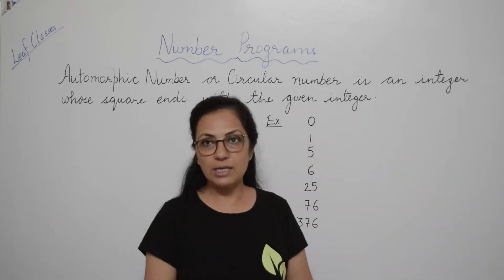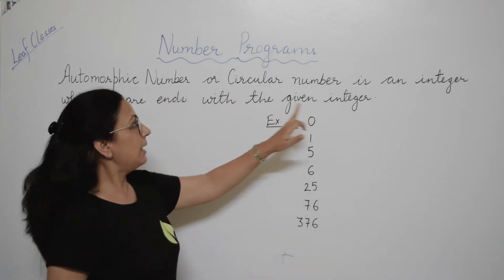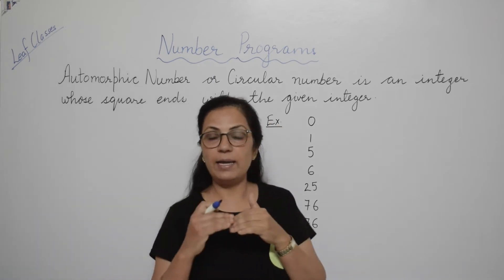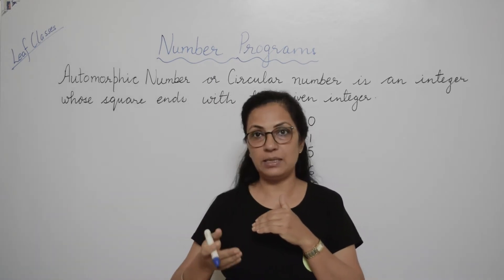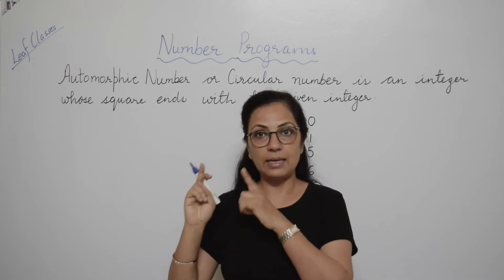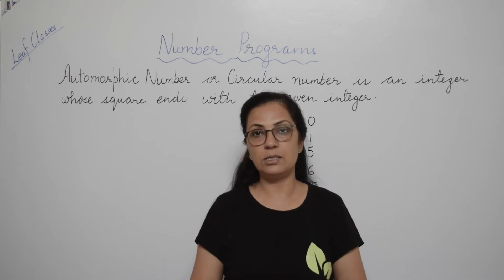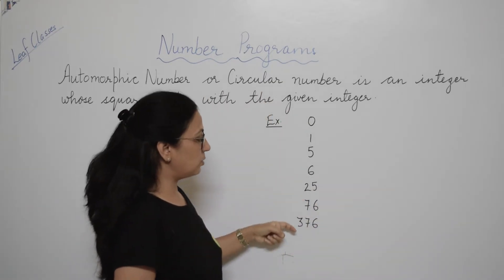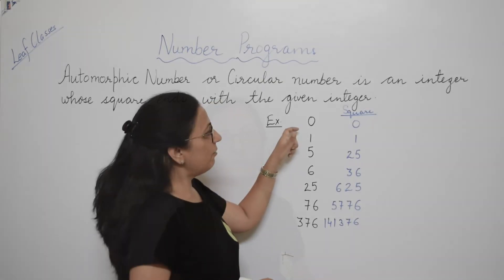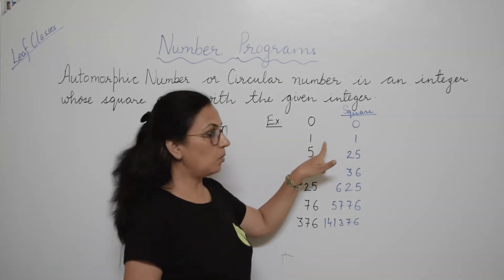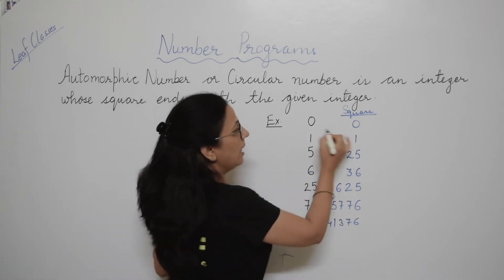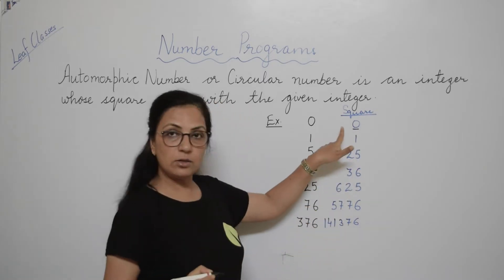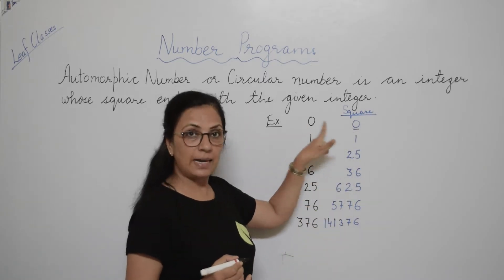What is the definition of automorphic number? It is an integer whose square ends with the given integer. If you find the square value of that integer, then at the end that integer should be present in that square. Few examples of automorphic numbers are 0, 1, 5, 6, 25, 76. The square of 0 is 0, square of 1 is 1, square of 5 is 25.